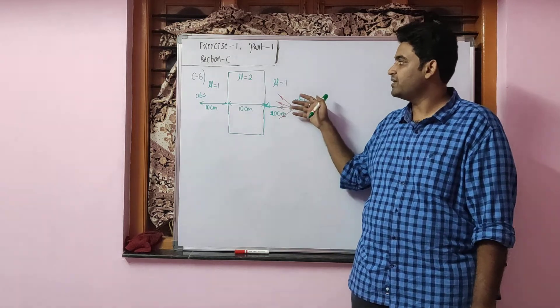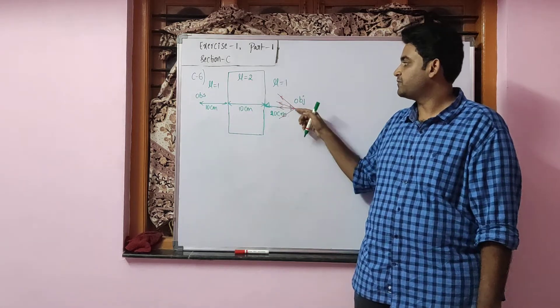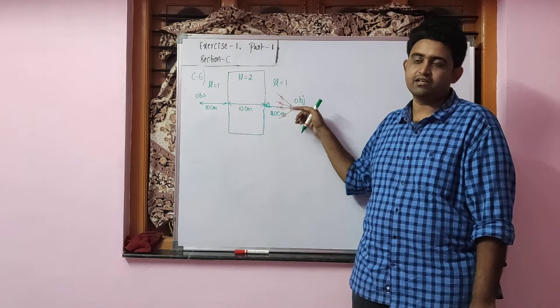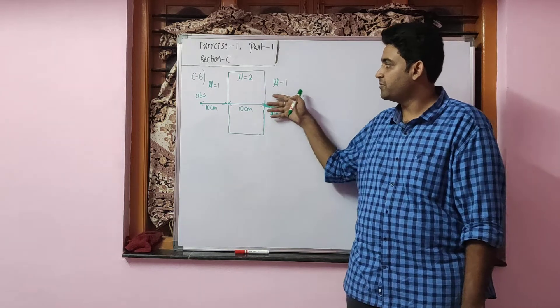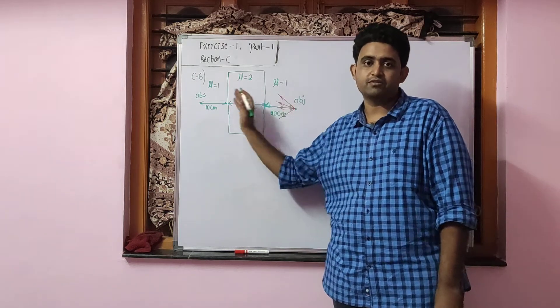So the shift will be in the direction of the travelling rays. From the object, the rays which are undergoing refraction at this slab will be going to the left, so the shift will also be to the left.